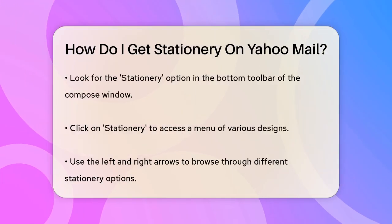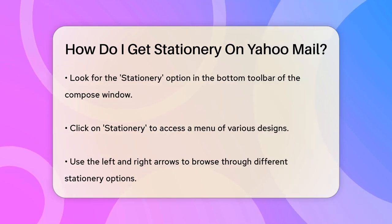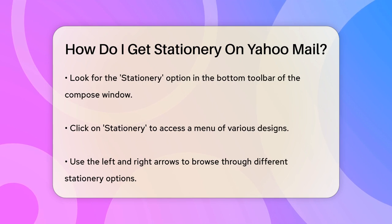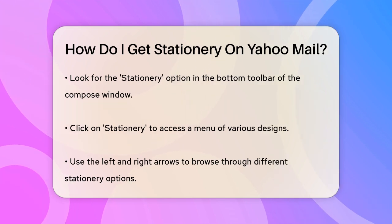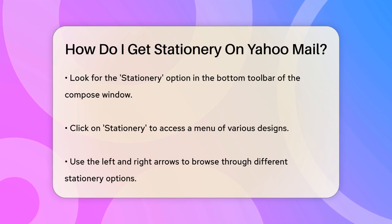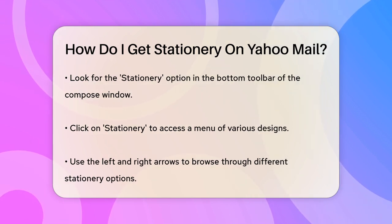Once you're in the Compose window, look for the bottom toolbar. Here, you'll find an option labeled Stationery. Click on this to open up a menu that shows various stationery designs. You can use the arrows on the left and right of the menu to browse through different options.